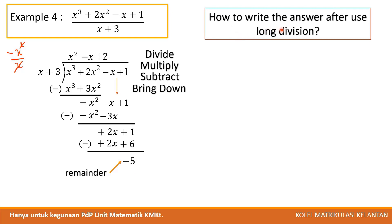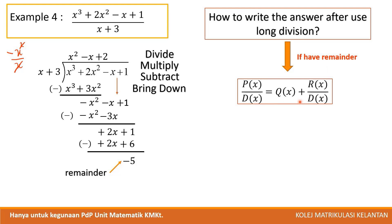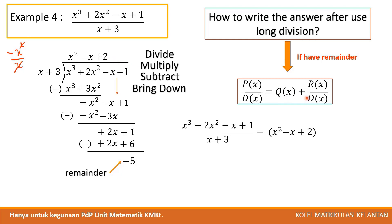To write the answer after long division when there is a remainder, use this form: p(x)/d(x) equals the quotient plus remainder over divisor. So the quotient is x² - x + 2, and the remainder is -5, giving the final answer x² - x + 2 - 5/(x + 3).